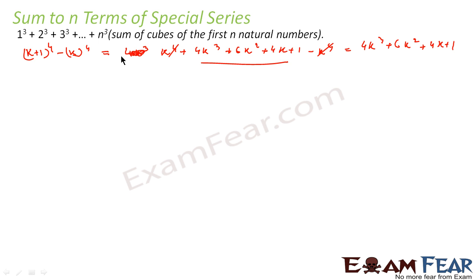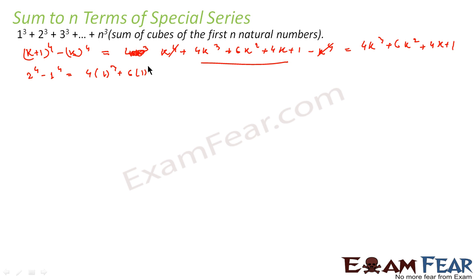We'll do the same thing we did in the last question. We say k is equal to 1: it becomes 2 to the power 4 minus 1 to the power 4, which equals 4 into 1 cube plus 6 into 1 square plus 4 into 1 plus 1. Now we say k is equal to 2: this becomes 3 to the power 4 minus 2 to the power 4.